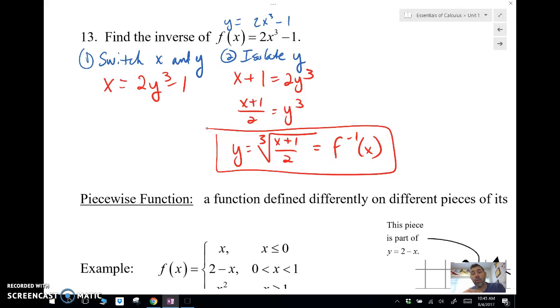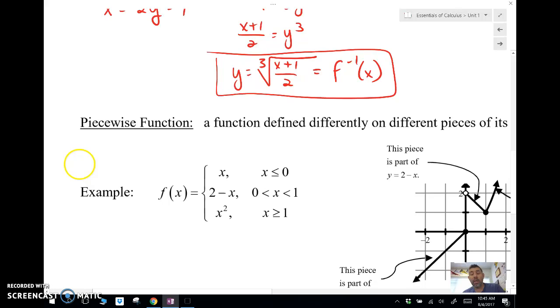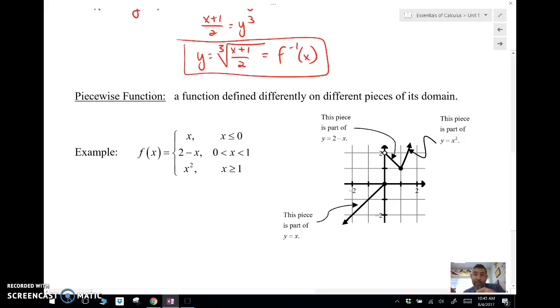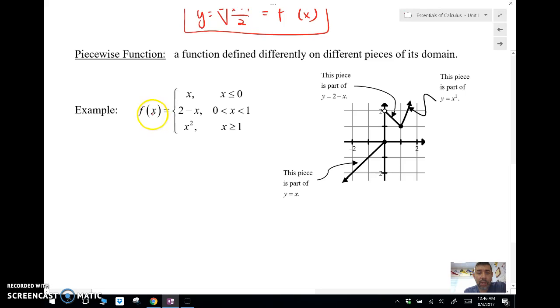Those are inverse functions. Let's take a look at the second part of this video, which is piecewise defined functions. A piecewise defined function is a function that has different pieces of its domain. So you can have different types of functions on one graph, but just broken up into pieces depending on what its domain for that one part of the function is. For example, if I have f of x equals, this is a piecewise function, where f of x is defined as being the function x when x is less than or equal to 0.